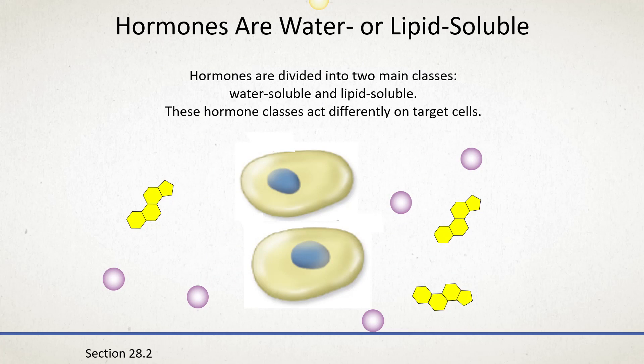Hormones are divided into two main classes: water-soluble hormones and lipid-soluble hormones. Water-soluble hormones can freely float through the bloodstream and are usually protein-based or amino acid-based. Lipid-soluble hormones require special transporters to move through the bloodstream; these are steroid-based hormones.